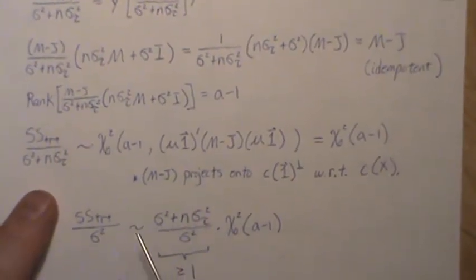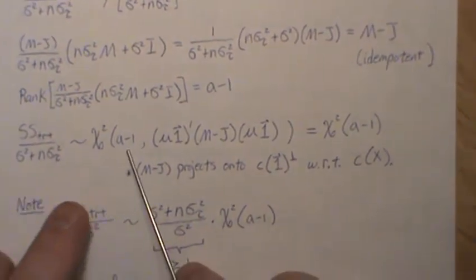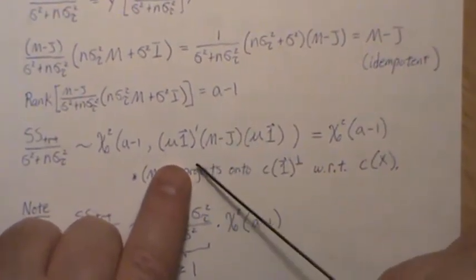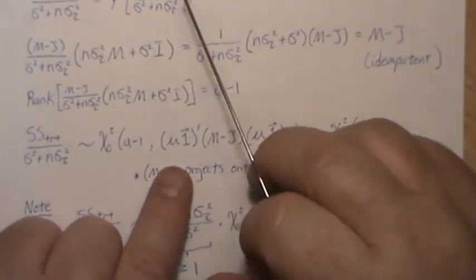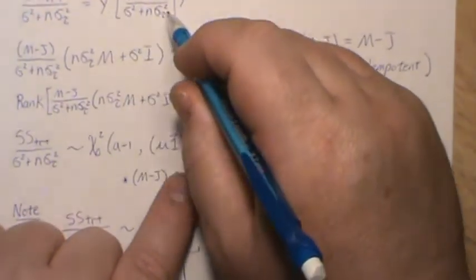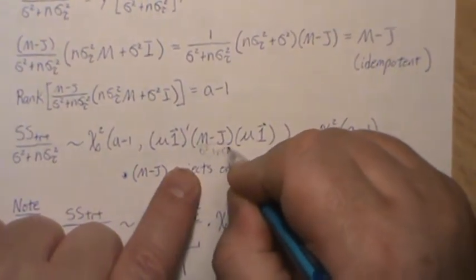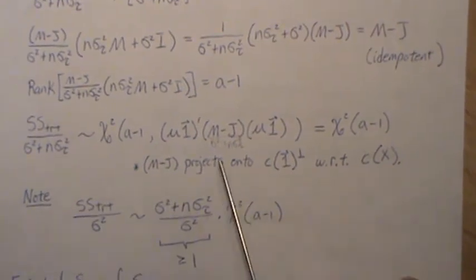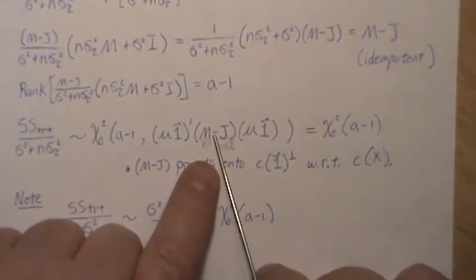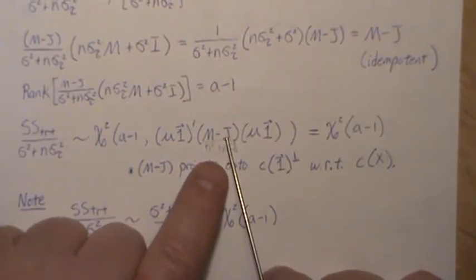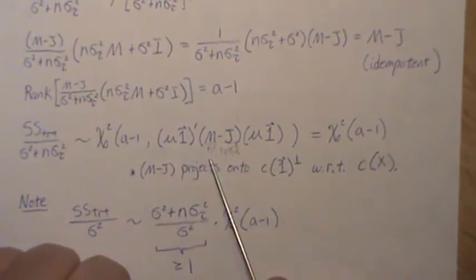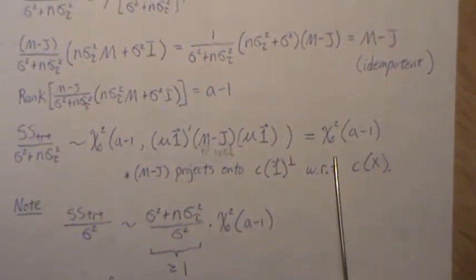According to Theorem 7, this is chi-squared with a minus 1 degrees of freedom. The non-centrality parameter involves the mean times the matrix — technically it should be divided by (σ² + n·σ_τ²), but leaving it off didn't affect the conclusion since M minus J is the perpendicular projection onto the orthogonal complement of the one vector with respect to M. So the one vector times that goes to zero, and it's a central chi-squared with a minus 1 degrees of freedom.